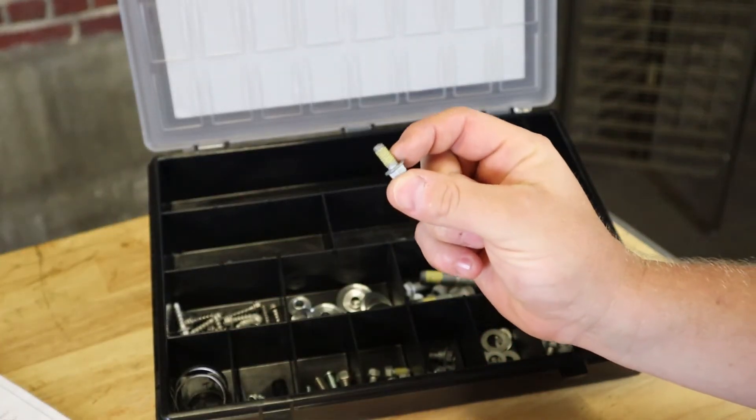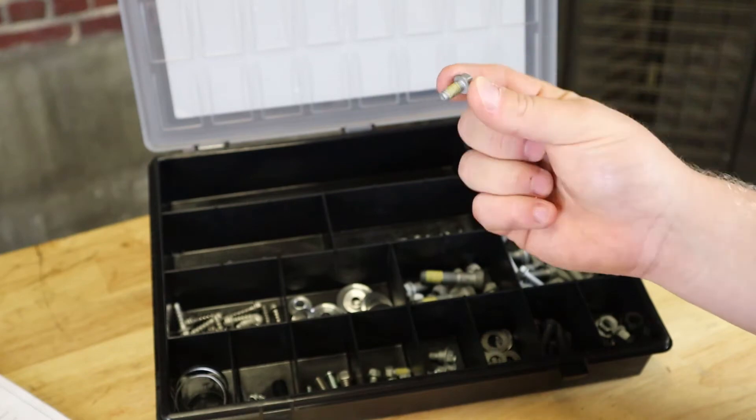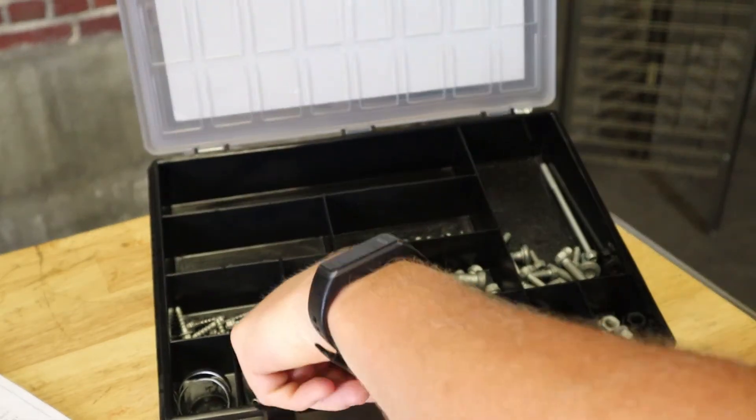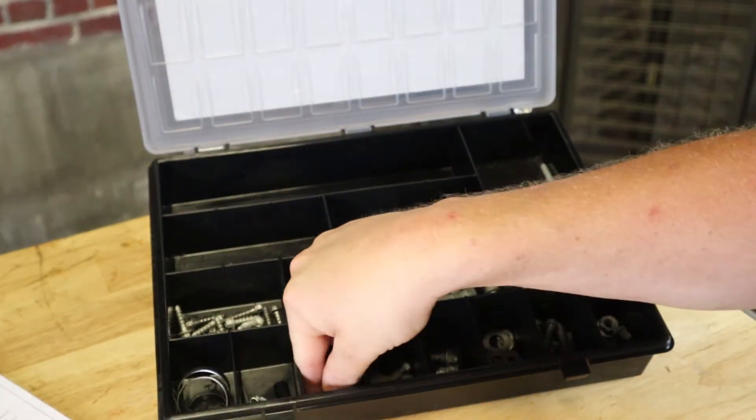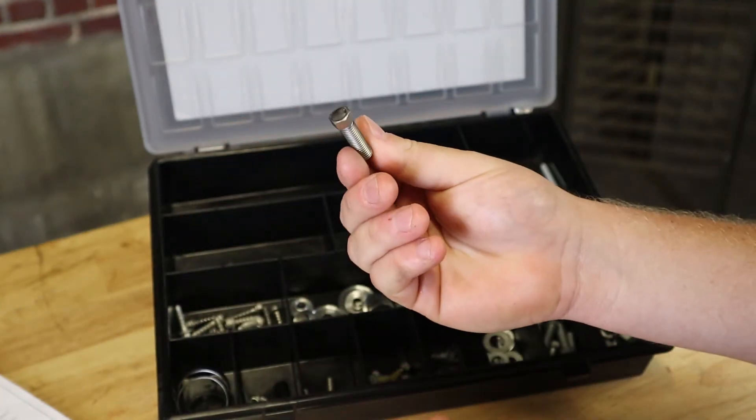All right, here you have some short M6s already impregnated with Loctite. This is going to work as like a rotor bolt. Over here, not sure where that goes exactly. But there's your chain adjuster.